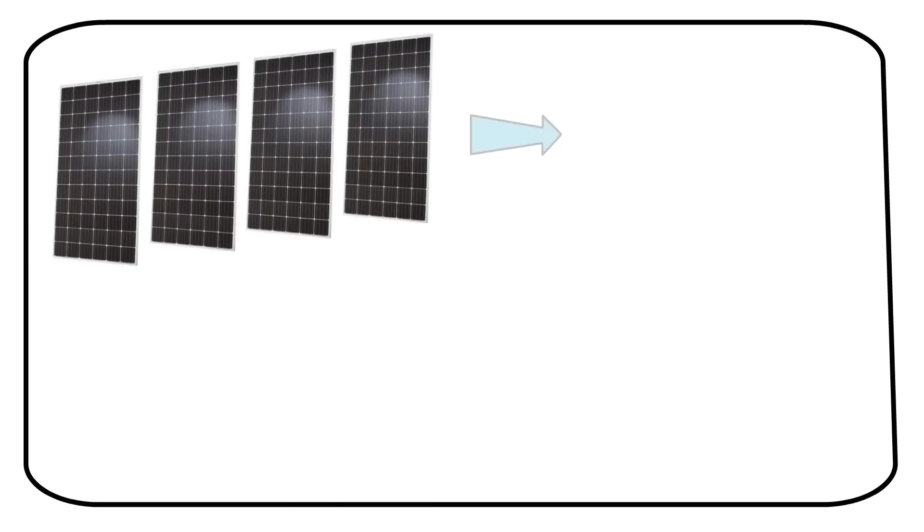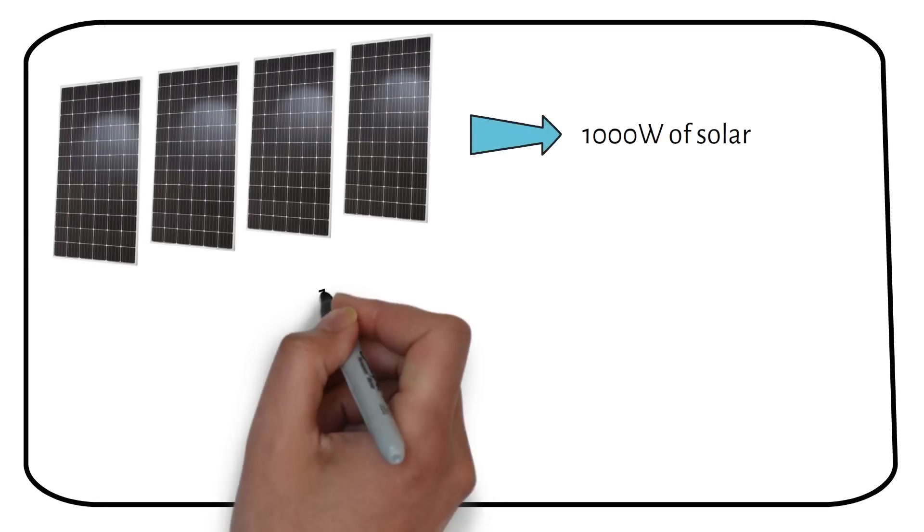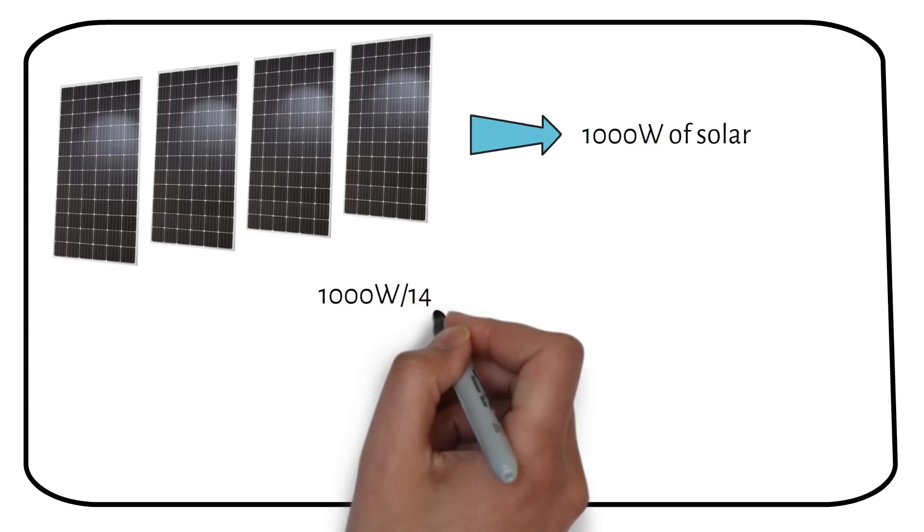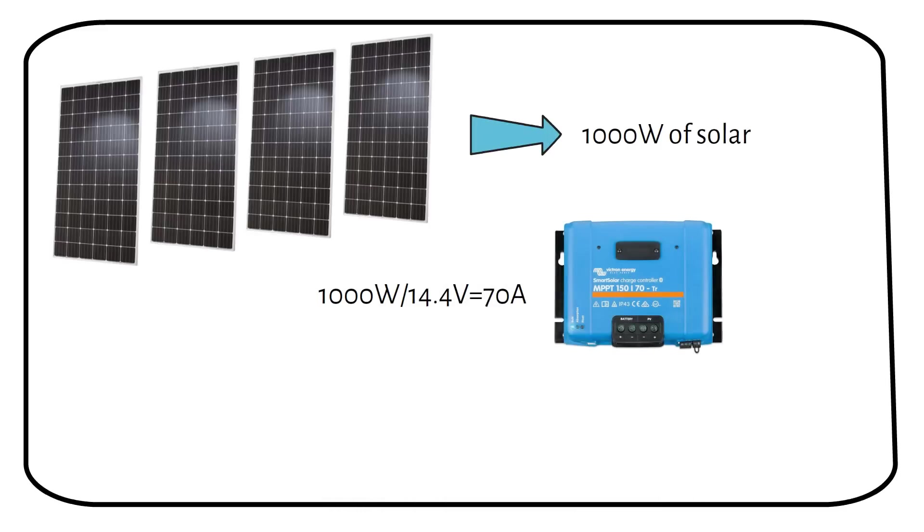Similarly, a charge controller for 1000 watts of solar panels on a 12 volt system needs to handle 70 amps, which will cost you $380.